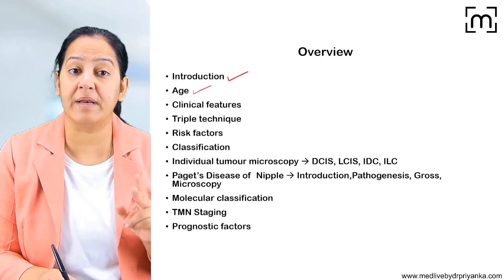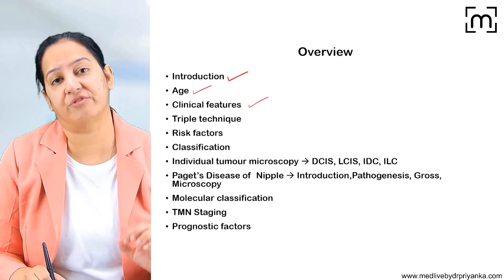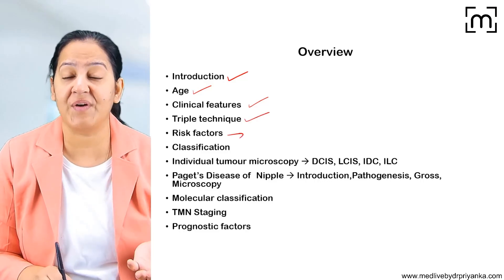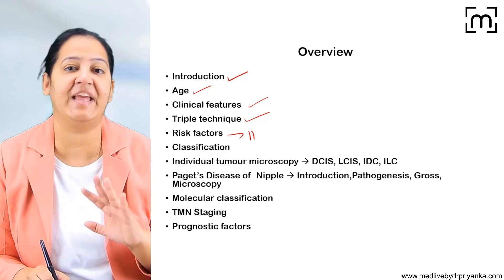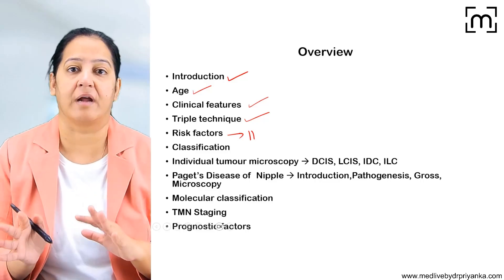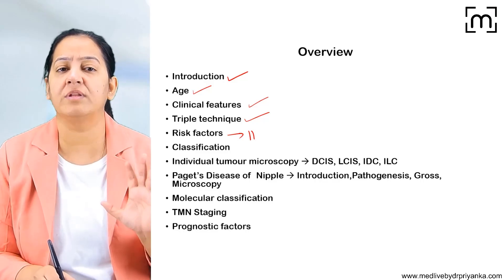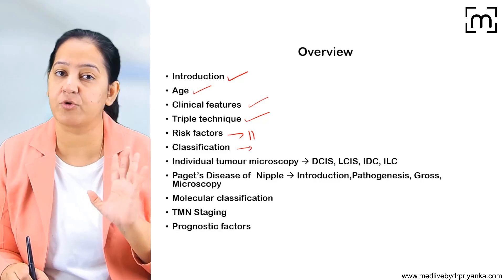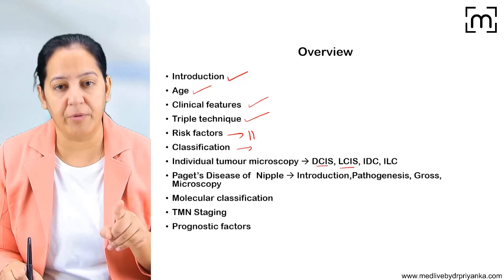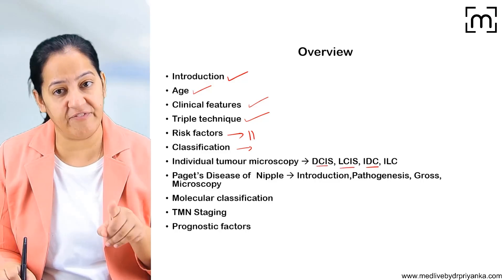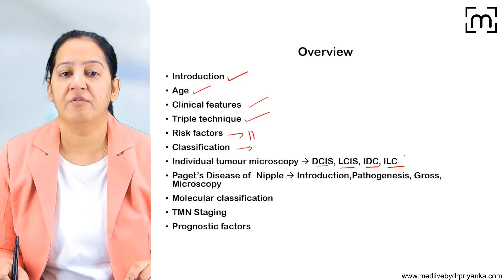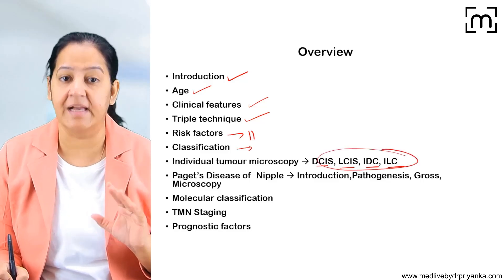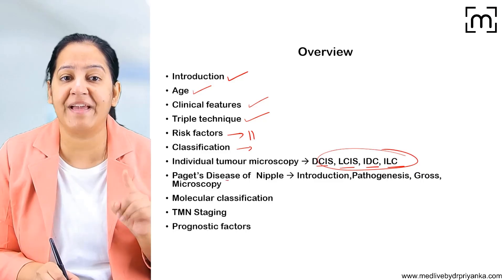First, write down the introduction of breast cancer, then the most common age of presentation, then the clinical features, then the triple technique to diagnose it, then the risk factors — I will be discussing 11 risk factors and explain each one. Then write the classification; from that classification, four are ultra important: ductal carcinoma in situ, lobular carcinoma in situ, infiltrative ductal carcinoma, and infiltrative lobular carcinoma — for each of these four we will see the gross and microscopy in detail. Then we will see a special variant — Paget's disease of the nipple.